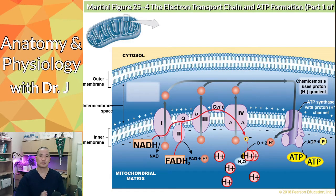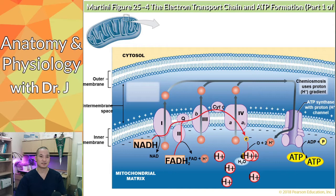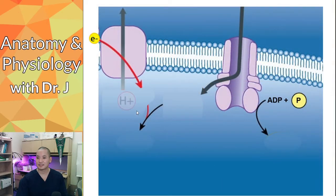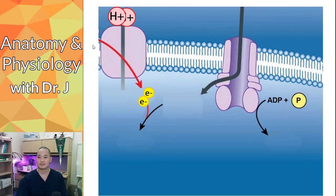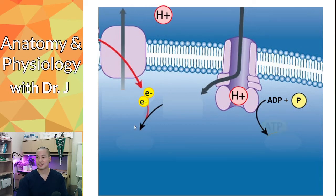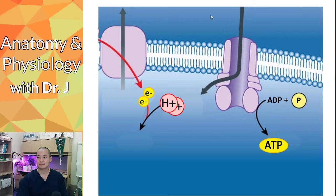The buildup of protons in the intermembrane space, and their subsequent spilling back into the matrix, drives the synthesis of ATP. Protons build up in the intermembrane space as electrons pass through the protein complexes, and as protons flow back into the mitochondrial matrix, ATP is generated.